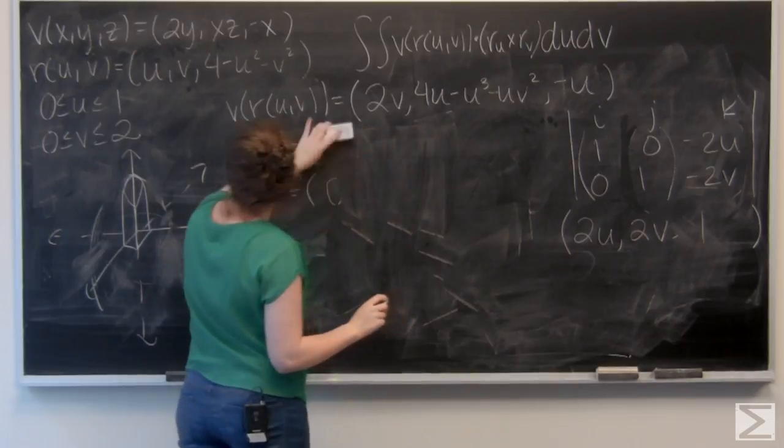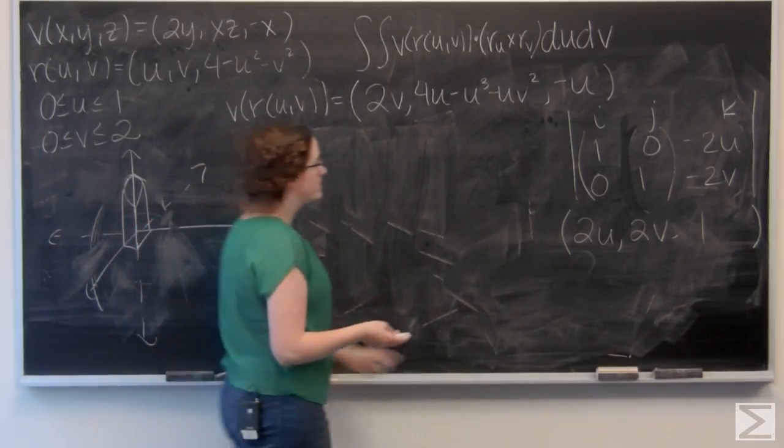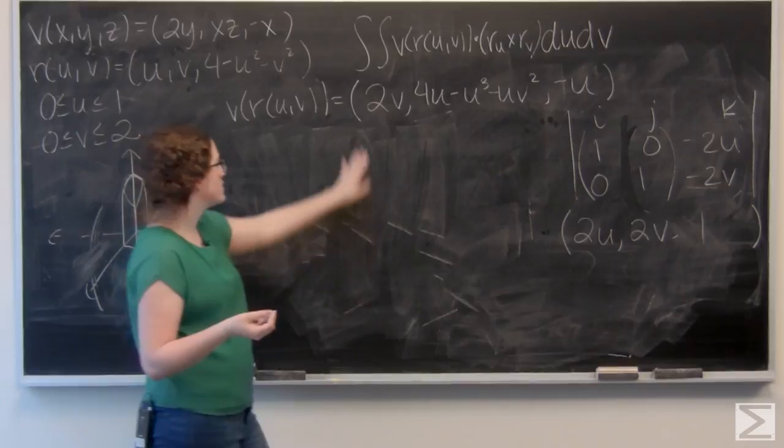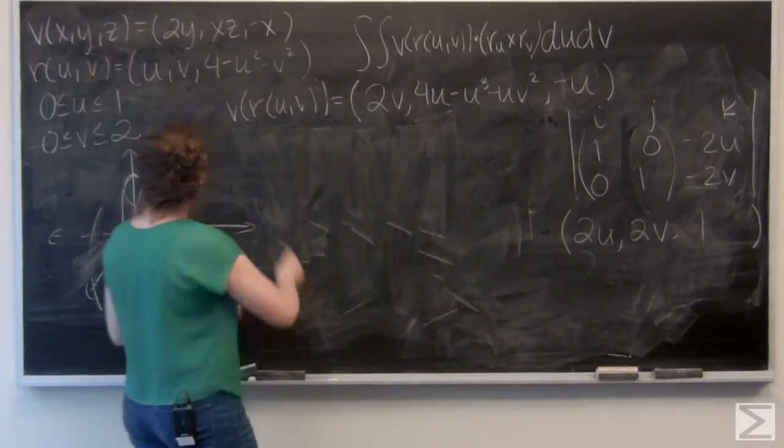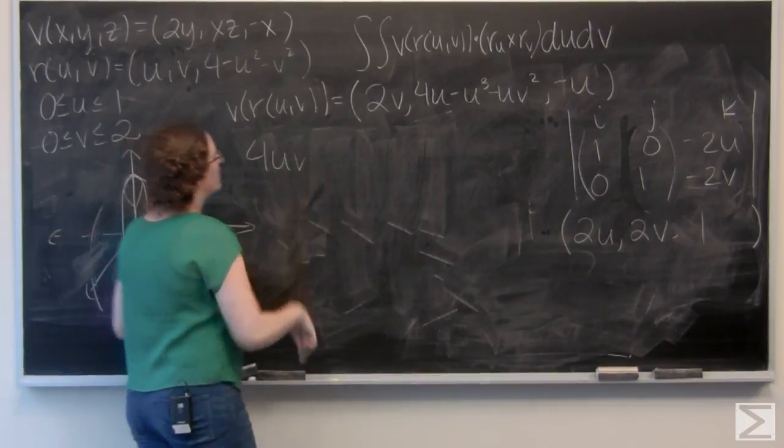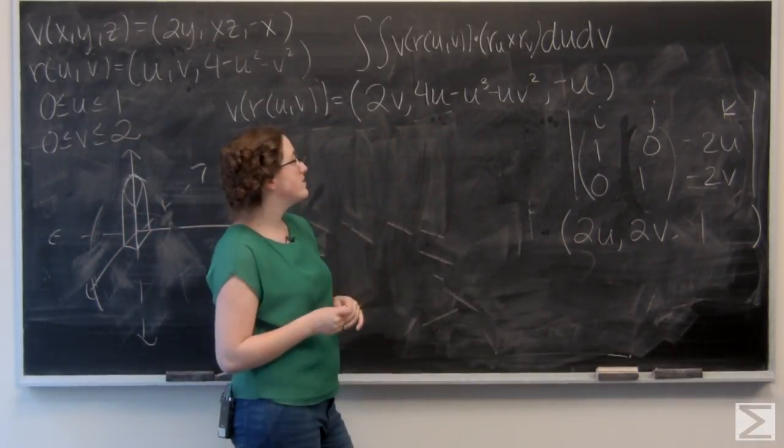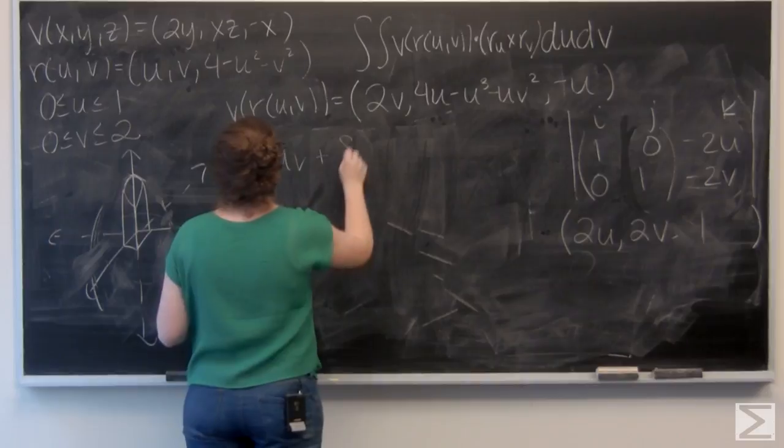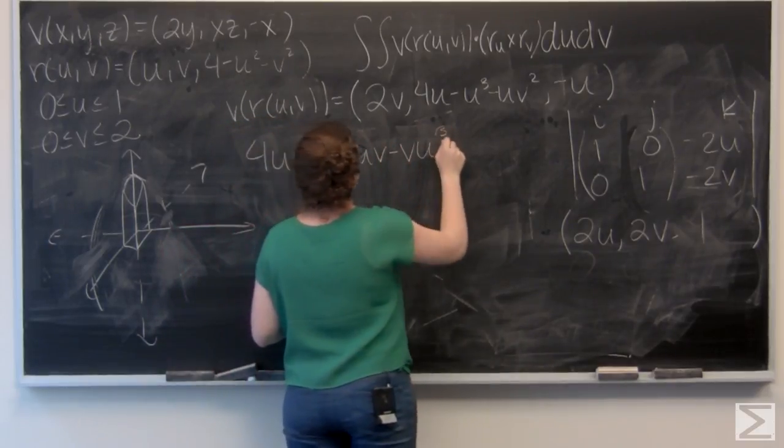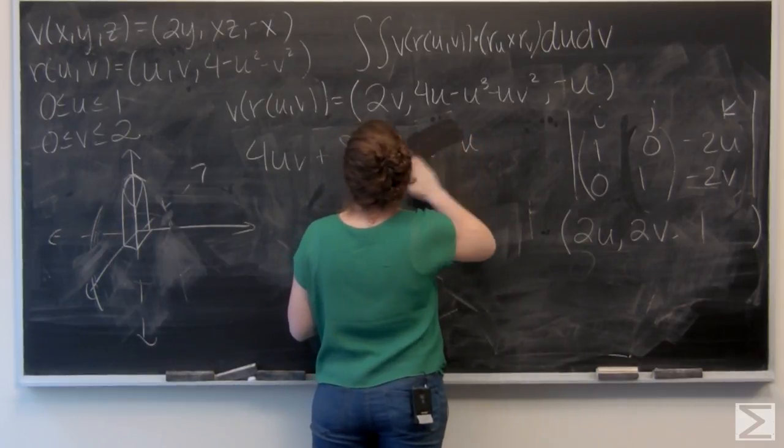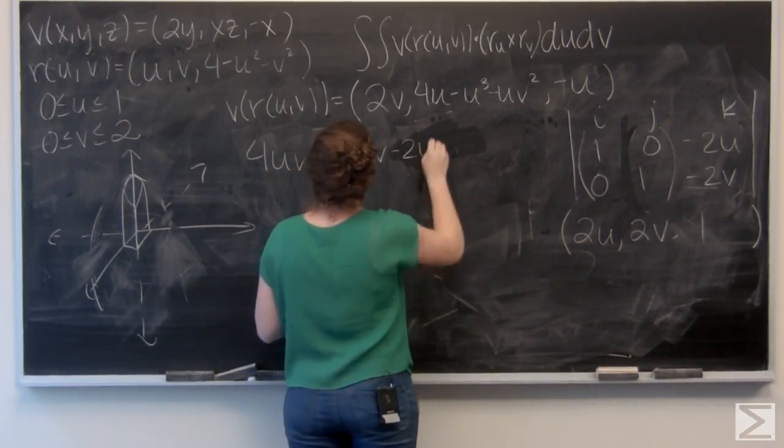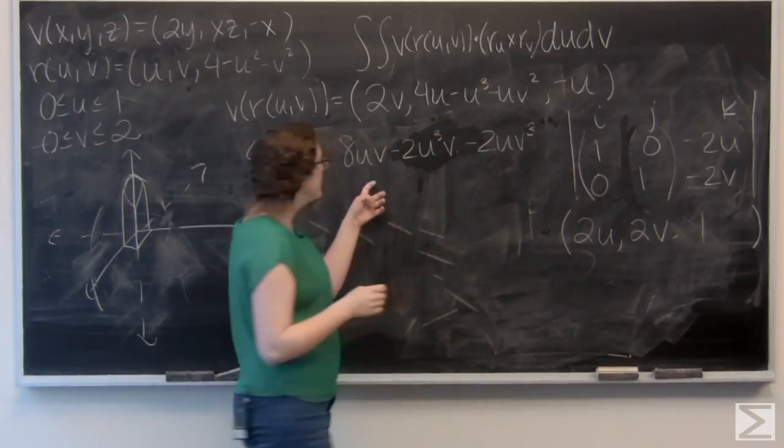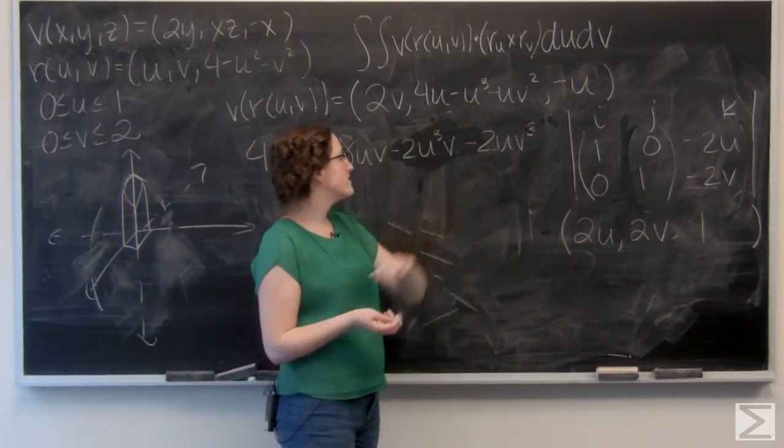So, now, I want to find the dot product of this vector, that's our cross product, with v of r of u and v. So, let's go ahead and do that. We've got 2v times 2u, so 4uv. And then, 2v times 4u minus u cubed minus uv squared. So, I'm just going to multiply that out. So, we've got 8uv minus 2u cubed v minus 2uv cubed.